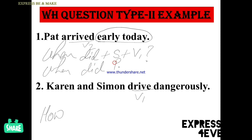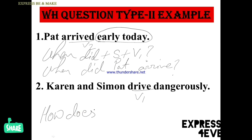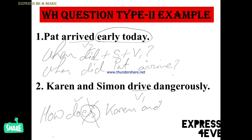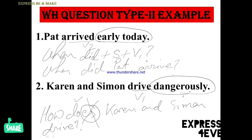Remember: whenever a question starts with 'do,' 'does,' or 'did,' the verb inside must always be V1. For number 2 — 'Current and Simon drive dangerously' — the WH word is 'how,' since 'how' deals with manner. The verb 'drive' is in simple present tense with no 's' or 'es' ending, so we use 'do.' The question becomes: 'How do Current and Simon drive?' The answer 'dangerously' we should not write.